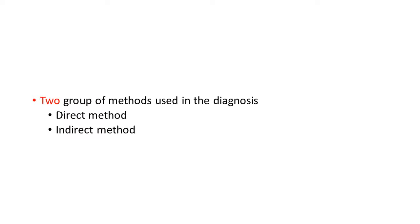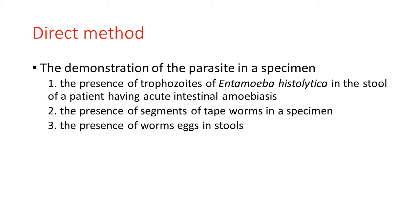There are two groups of methods used to diagnose parasites or parasitic stages: the direct method and the indirect method. In the direct method, we are going to demonstrate the parasite or parasitic stages in the specimen. For example, the presence of trophozoite of Entamoeba histolytica in the stool of acute intestinal amoebiasis, the presence of segments of the tapeworm, or the parasitic eggs in the stool sample — directly we are identifying the parasitic stages.